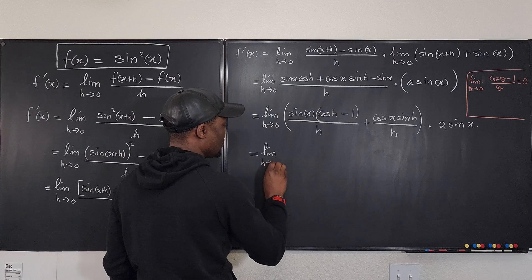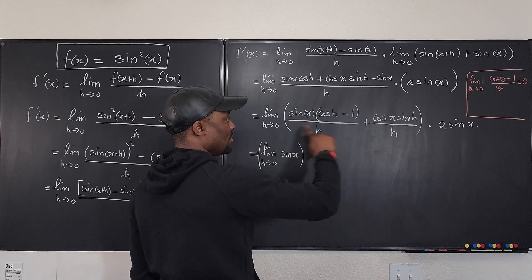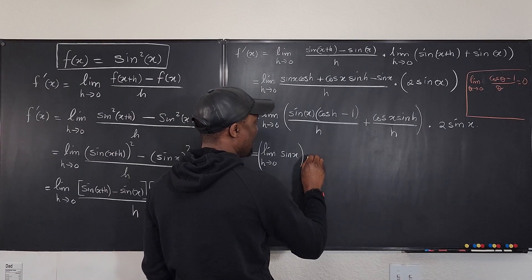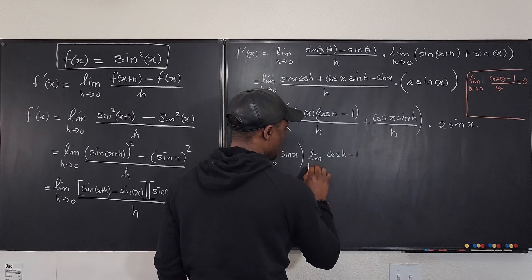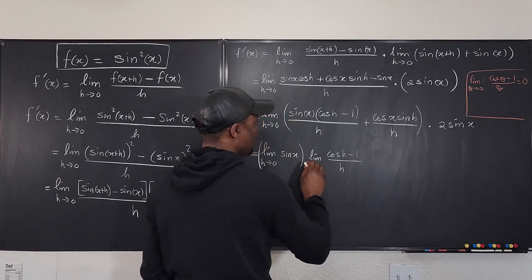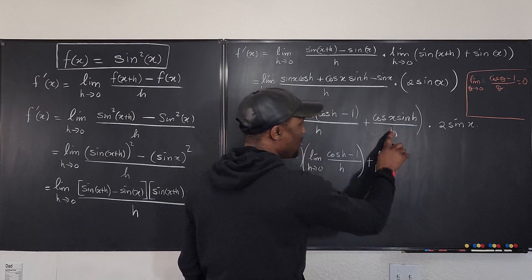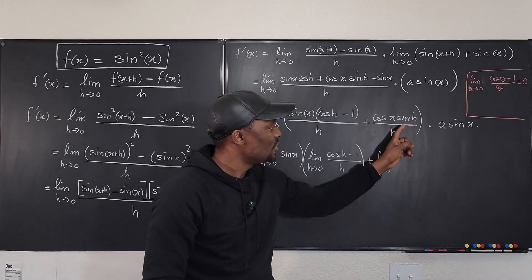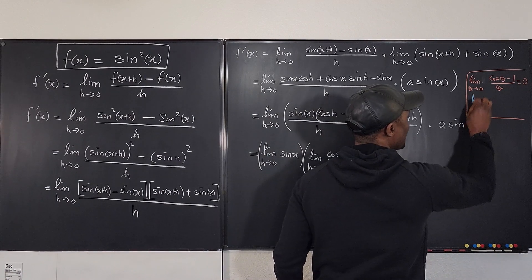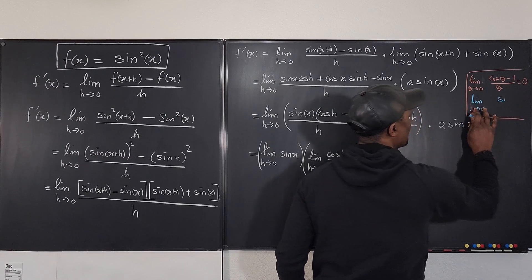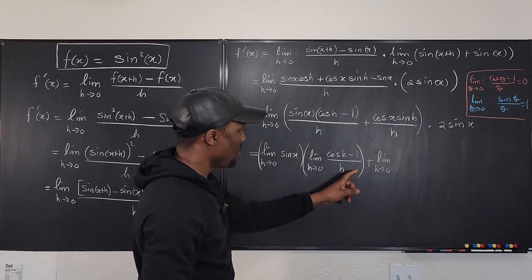So we rewrite this as the limit as h goes to zero, applying the limit law and distributing: sine x multiplied by the limit as h goes to zero of (cosine h minus 1) over h, plus cosine x times the limit as h goes to zero of sine h over h. We also know that the limit as theta goes to zero of sine theta over theta equals one.